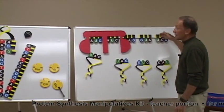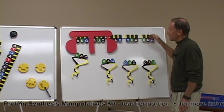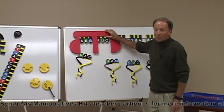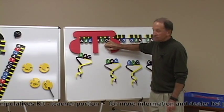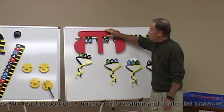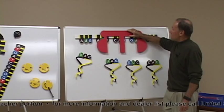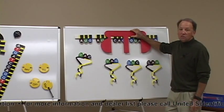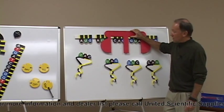You'll receive a complete messenger RNA strand and a ribosome with an A-site and a P-site. The ribosome can be moved along the messenger RNA as you code for each amino acid.